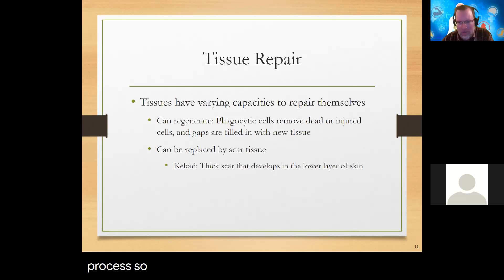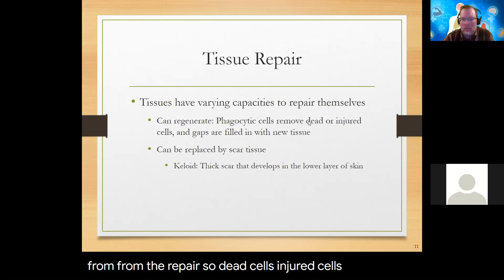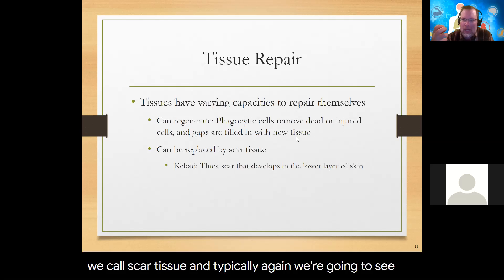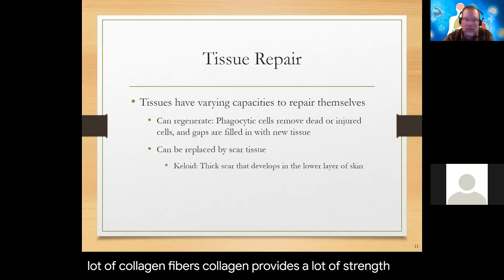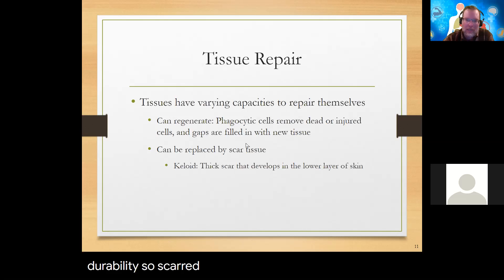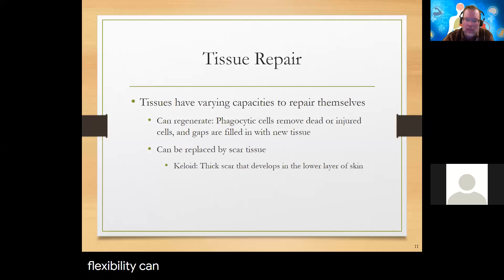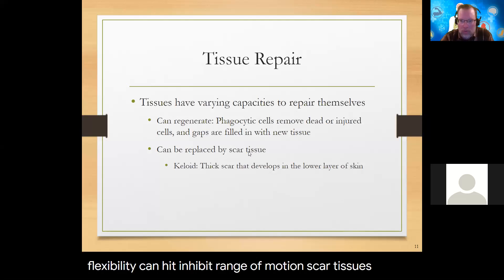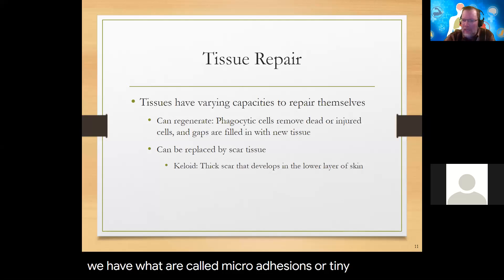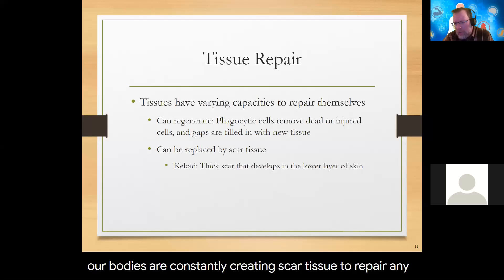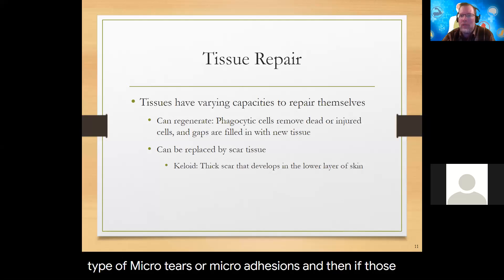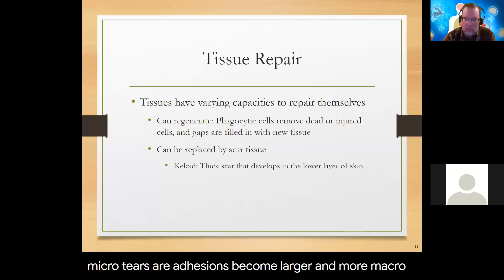Dead and injured cells get replaced with what we call scar tissue. Typically we're going to see a lot of collagen fibers — collagen provides strength and durability. Scar tissue is usually a large collection of dense collagen, which can inhibit flexibility and range of motion. On the cellular level, our bodies are constantly creating scar tissue to repair micro tears or micro adhesions. When those become larger and more macro scale, we'd see more scar tissue and possibly limitations in range of motion and blood flow.